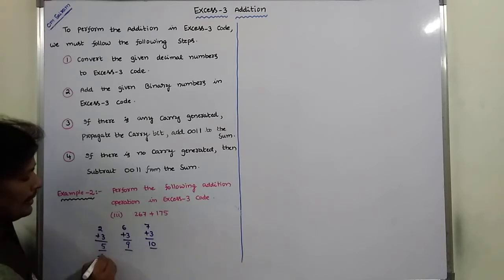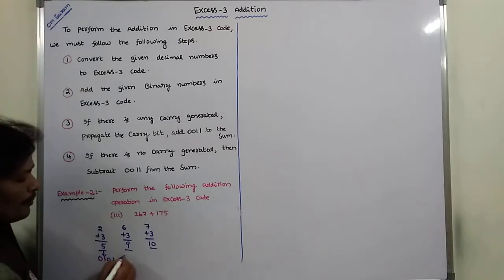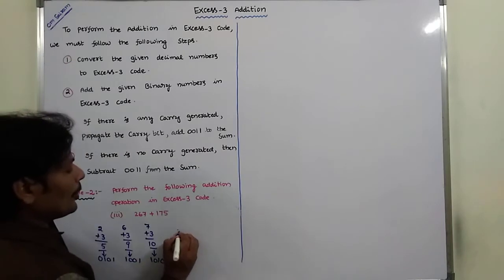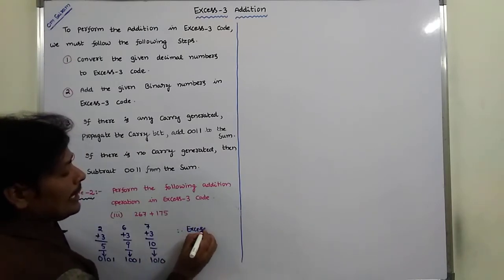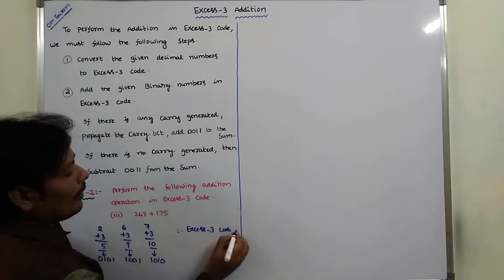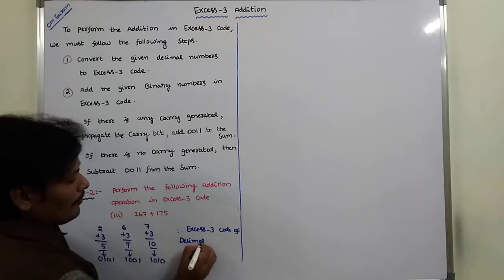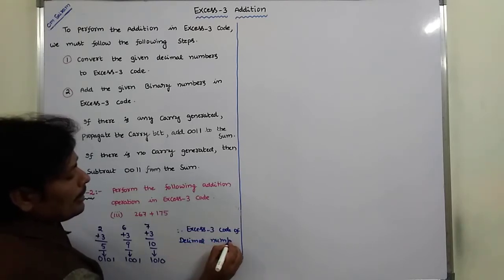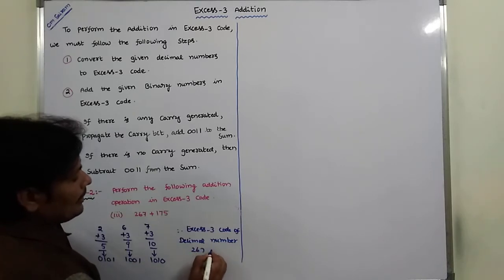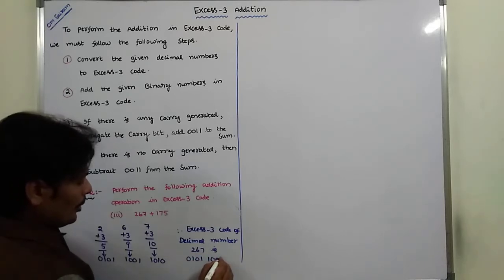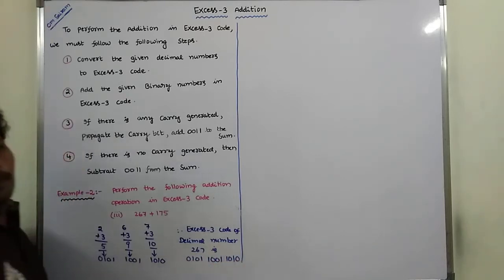What is the equivalent binary number? The XS3 code of decimal number 267 is: 0101, 1001, 1010. Each digit's decimal sum is converted to its 4-bit binary equivalent to form the full XS3 code.